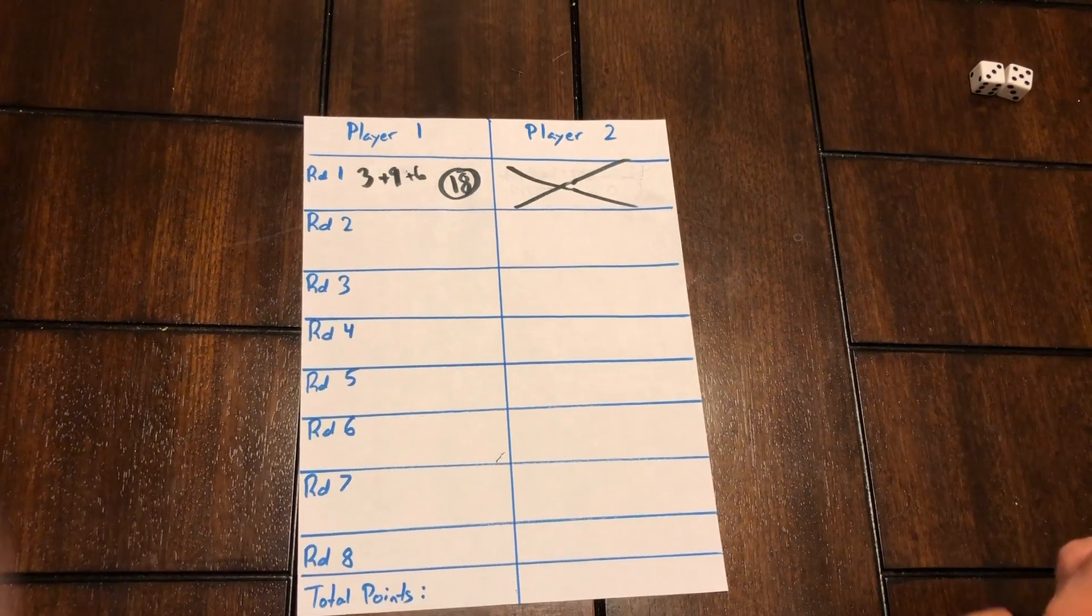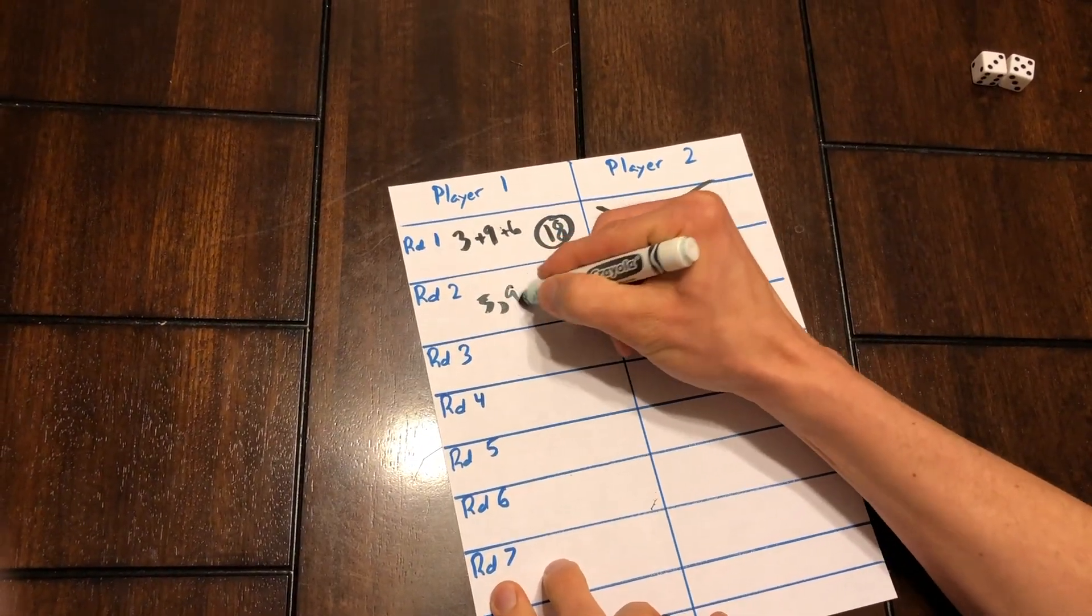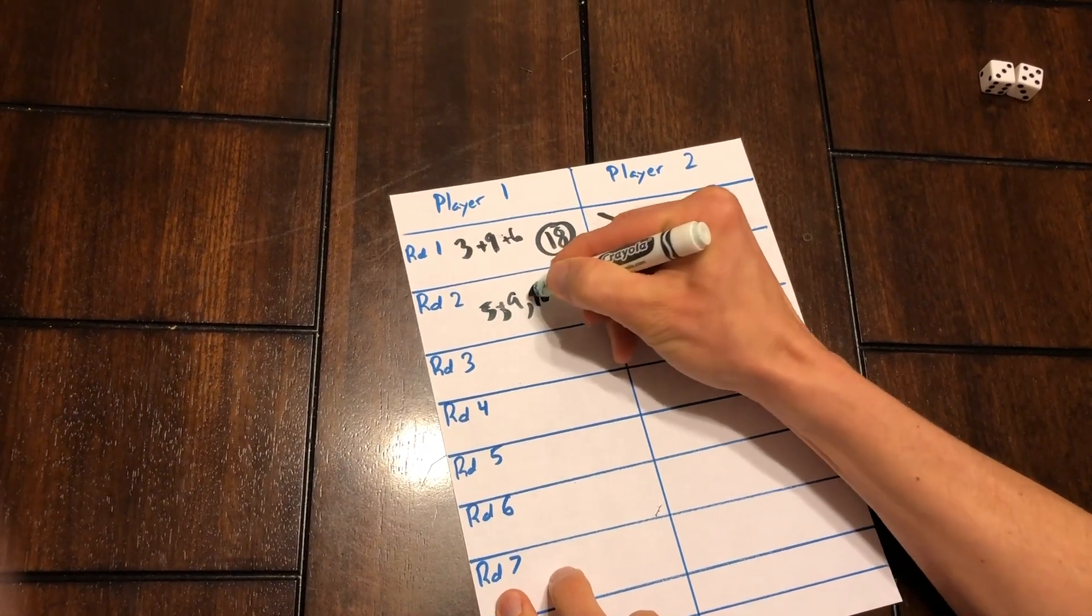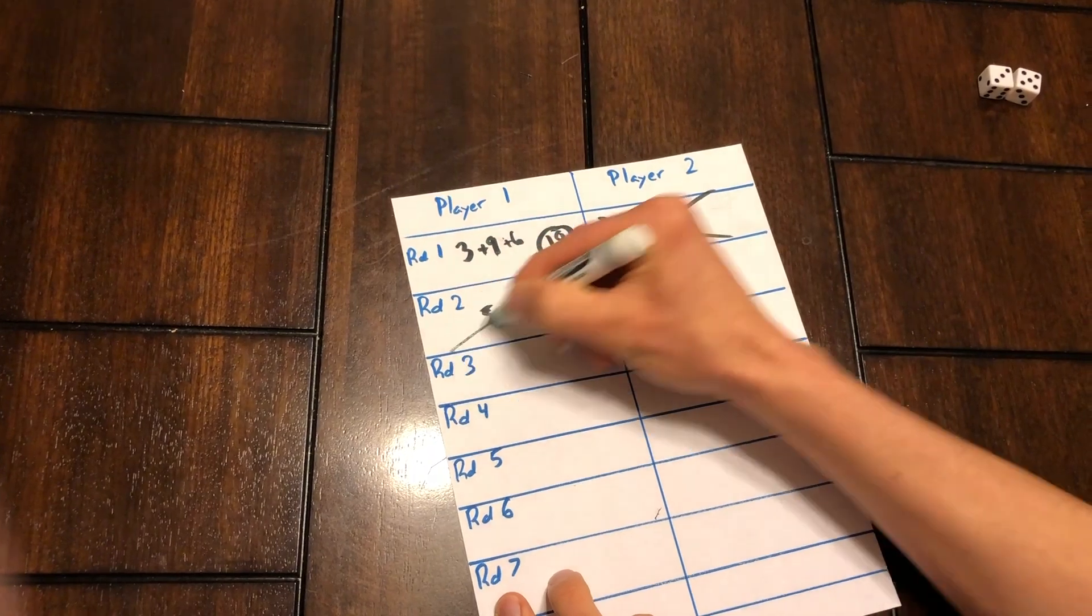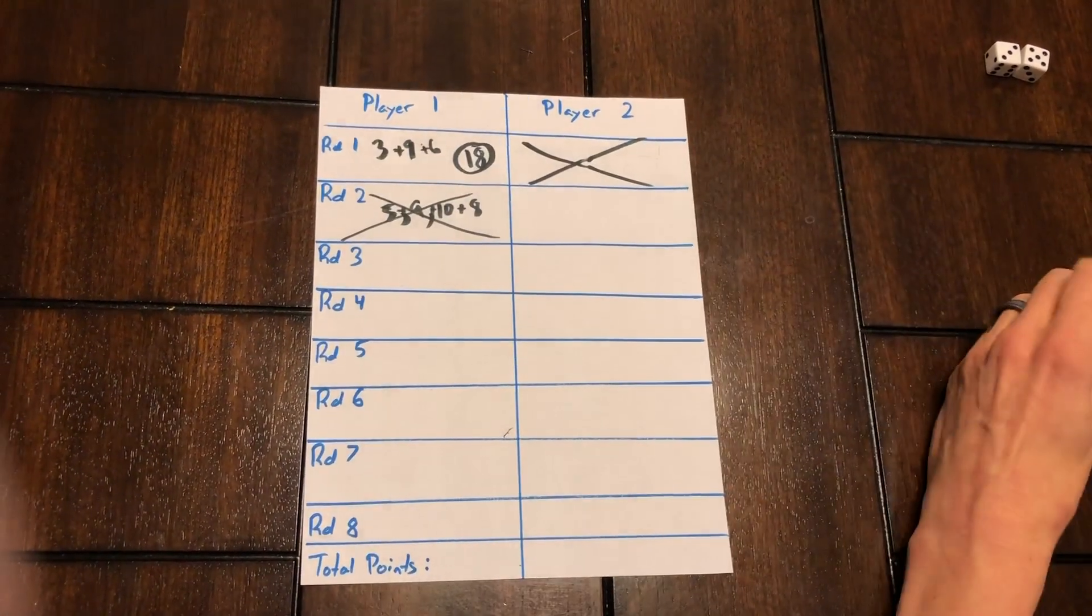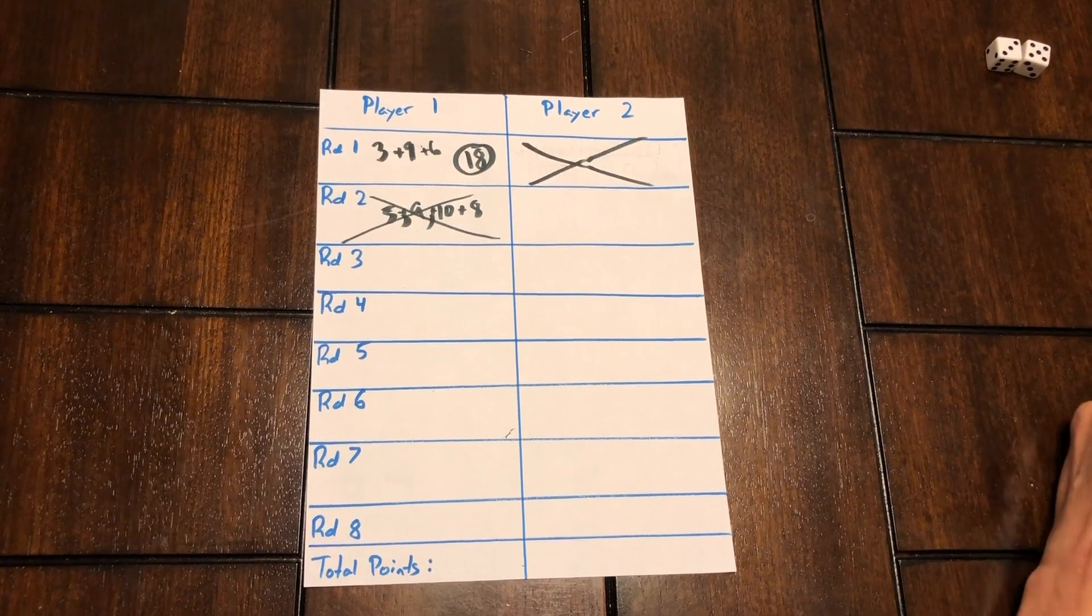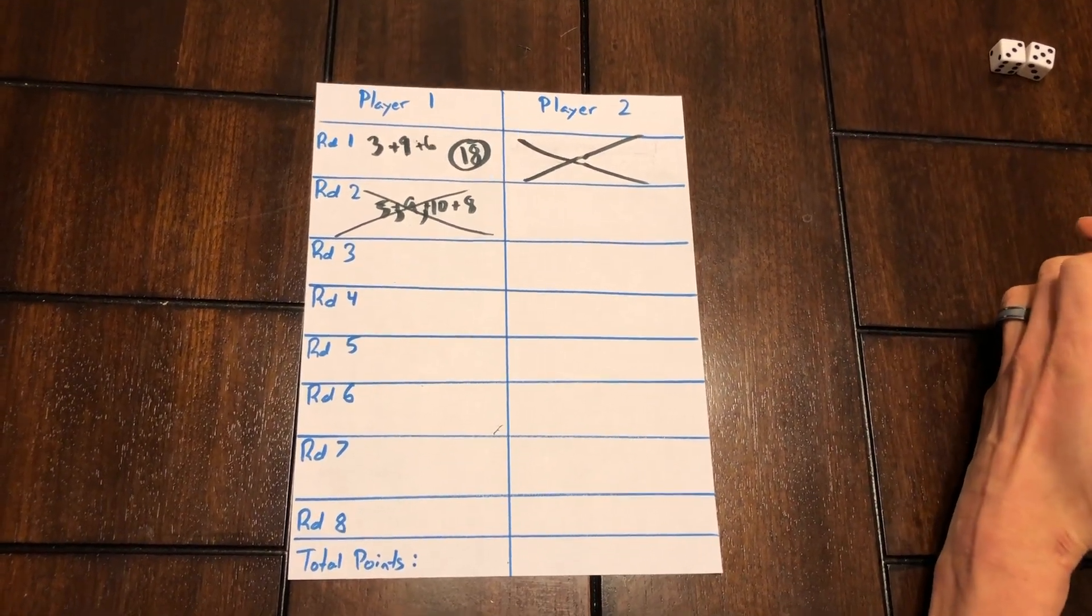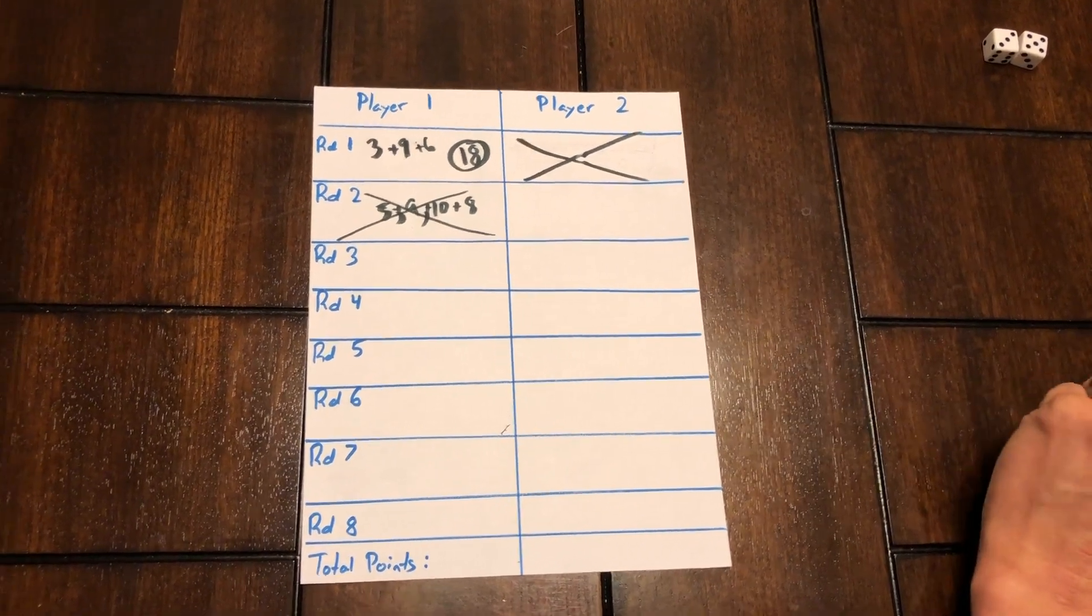Say, for example, I rolled and I got a five, and then I got a nine and ten, and then all of a sudden I rolled an eight. Even though I had all these points here, if I rolled an eight, I lose it. So the point is you want to find that right time to bank your points and save them before you lose it with an eight.